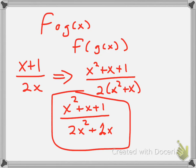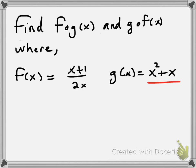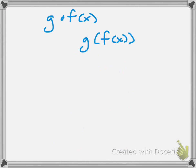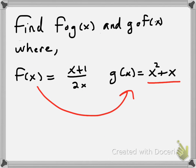Now, let's look at the other way. So, I want to now put f into g of x. So, again, my g of x is x squared plus x. My f being x plus 1 over 2x.